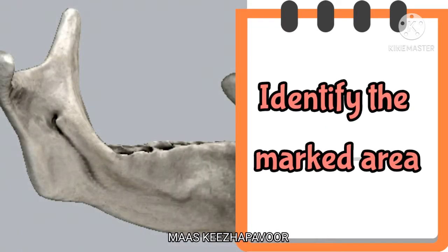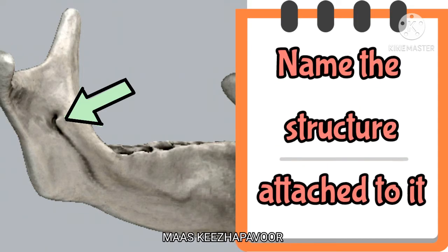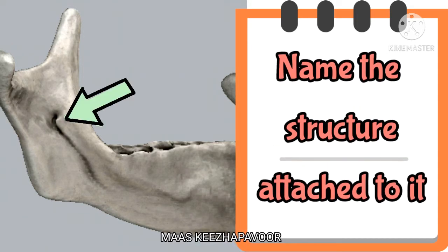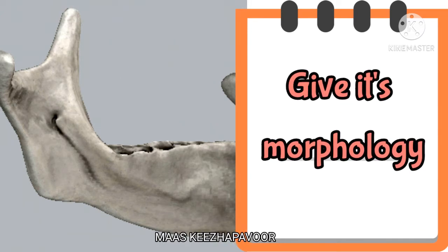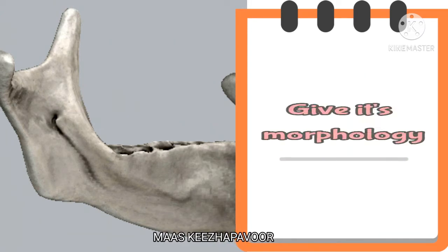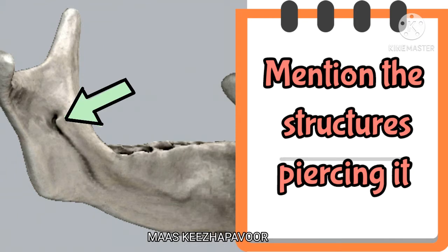Identify the marked area, name the structure attached to it, give its morphology, and mention the structures piercing it.